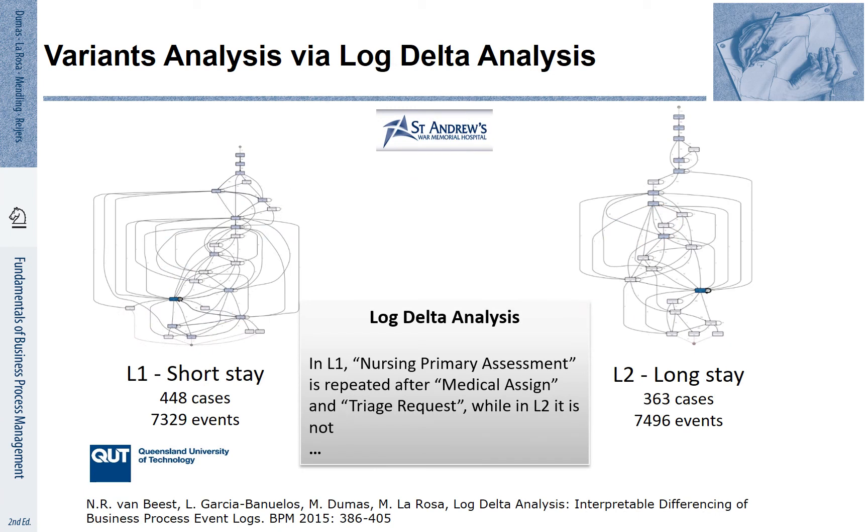Let's look at another example where process mining was applied to identify explanations for differences. The variance analysis here refers to the St. Andrews War Memorial Hospital. This is a hospital in Brisbane, Queensland, Australia. For a certain treatment, it was observed that some cases resulted in short stays, while other cases resulted in long stays. You see that the process on the left-hand side and on the right-hand side are partially different.